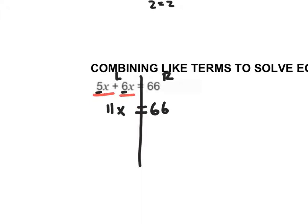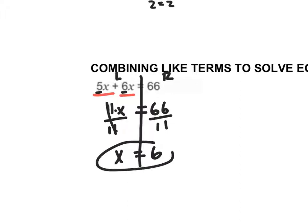So 11x equals 66. Notice I didn't do any opposite operation — that's because they're strictly on the left side of the equal sign. If they're on the same side, I just add them together. Now I take my 11 and move it across to the other side. The opposite of multiplying by 11 is dividing both sides by 11. 11 divided by 11 divides out to 1, so x is equal to 66 over 11, which is 6.